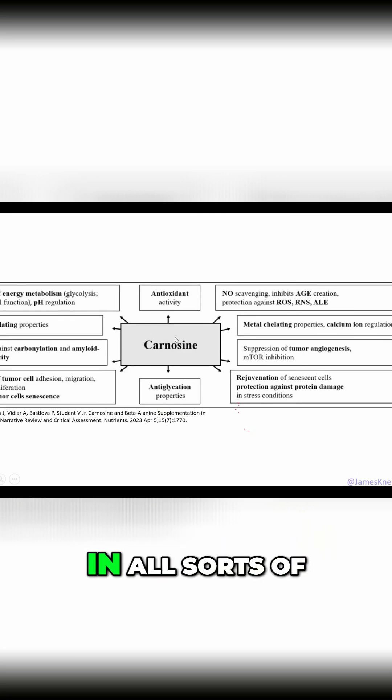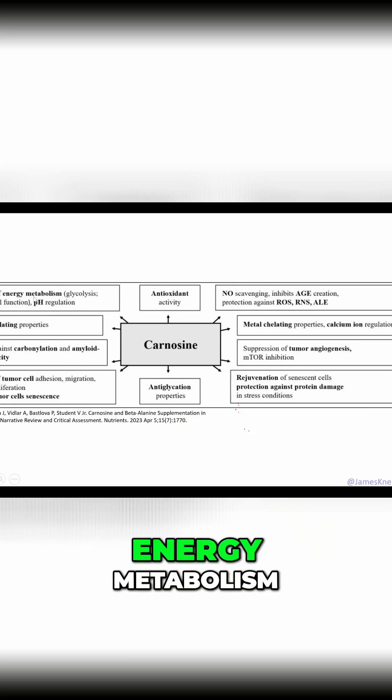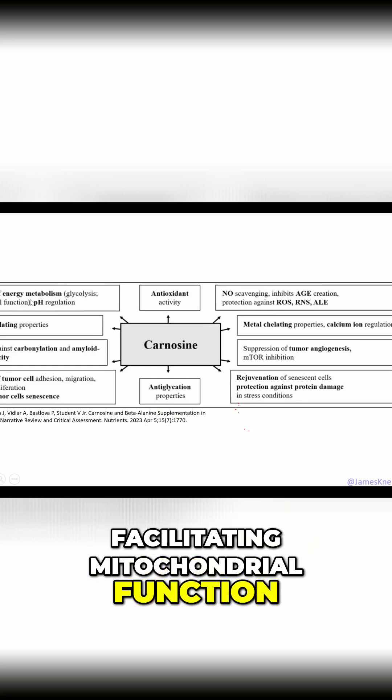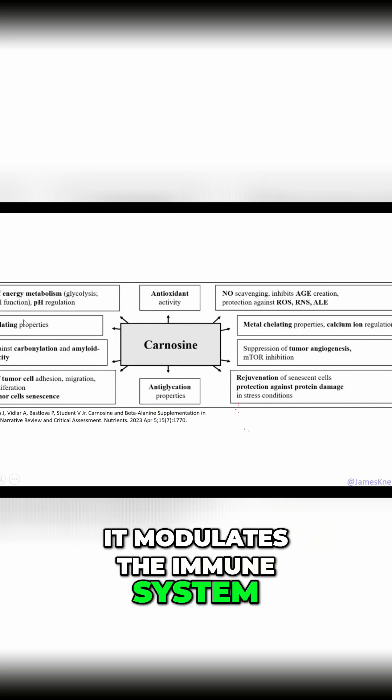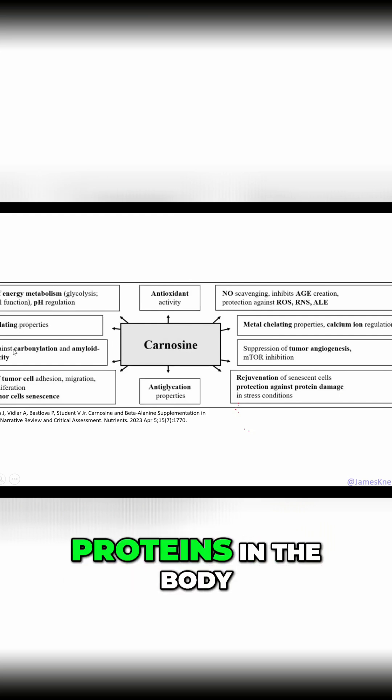Carnosine is involved in all sorts of functions in the body. It is involved in energy metabolism, facilitating mitochondrial function. It modulates the immune system. It protects you against toxicity from different toxic proteins in the body.